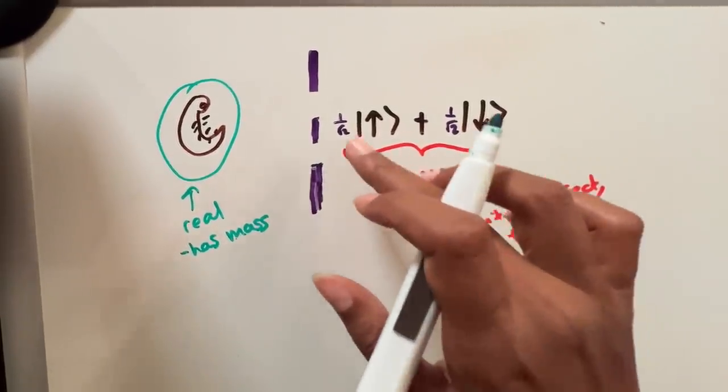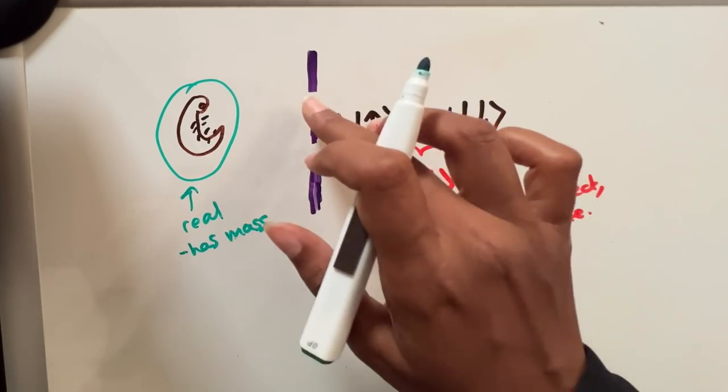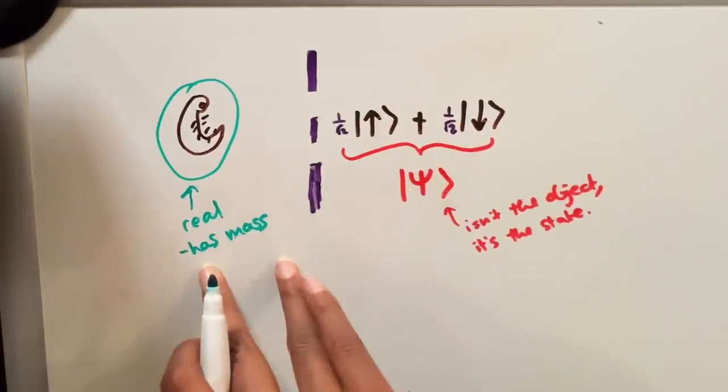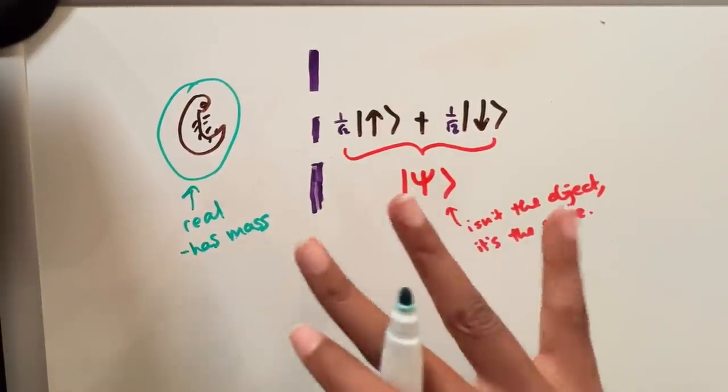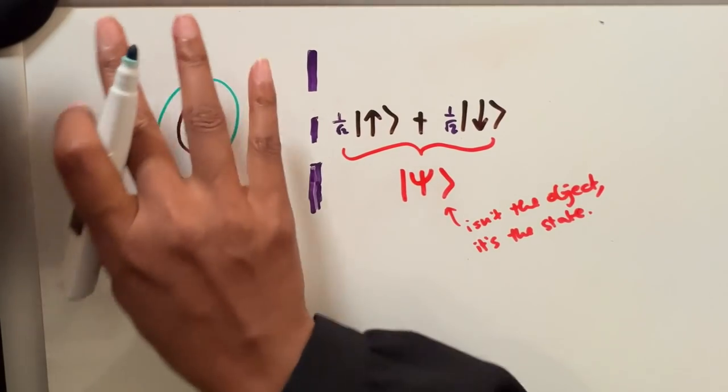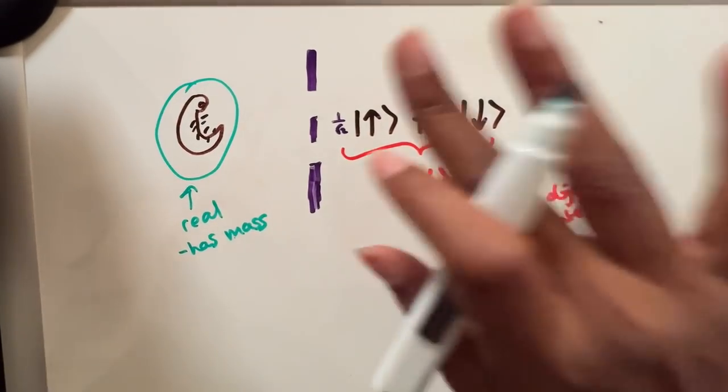But this wave function is describing the state of that object. The state of that object currently is the state of both having gone through the top slit and the bottom slit, but there's still only one of that object. And so I guess this is like a kind of funny distinction between these two things. So this object is real.